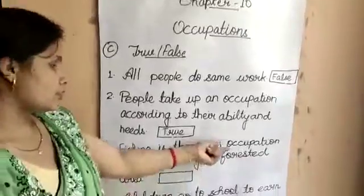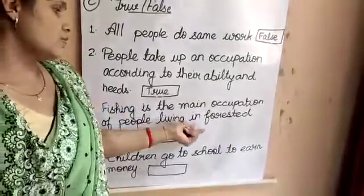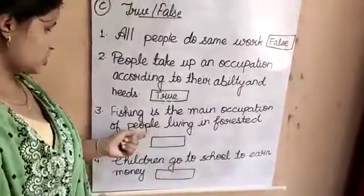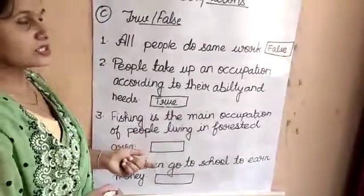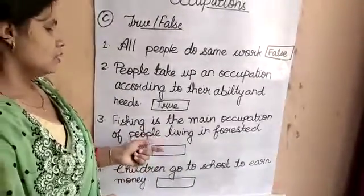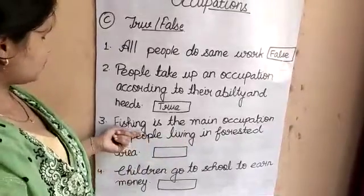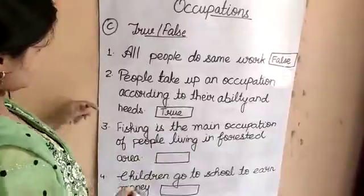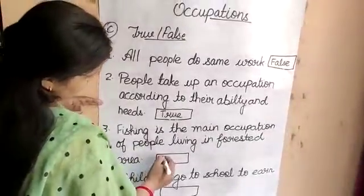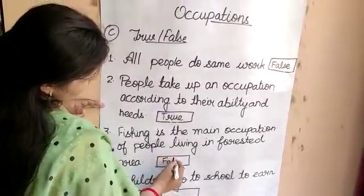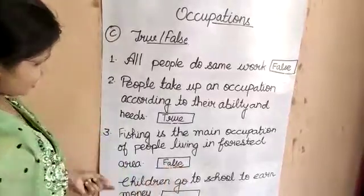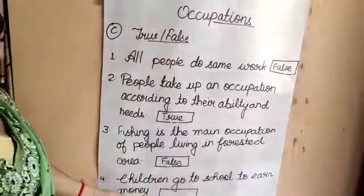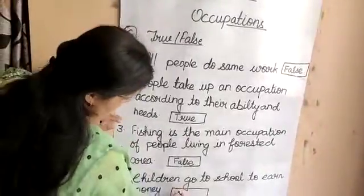Fishing is the main occupation of people living in a forested area. This is false — fishing is the main occupation in coastal areas, not forested areas. So the answer is FALSE.